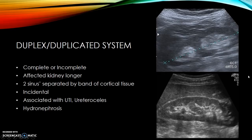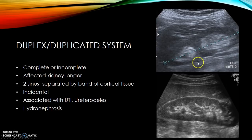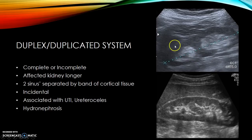A duplicated renal collecting system can be complete or incomplete. On ultrasound you see two echogenic renal sinuses separated by a band of cortical tissue. The kidney is usually longer than the opposite side unless both are duplicated. If complete, there are two ureters; if incomplete, there is one ureter or a bifid ureter that joins before entering the bladder. With a complete duplicated system a non-functioning ureter can cause hydronephrosis, usually of the upper pole moiety, and this is sometimes associated with ureteroceles.